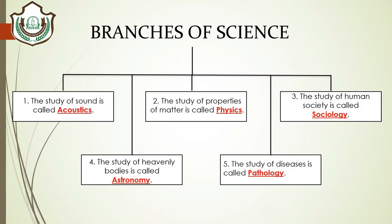Our next chapter is chapter number 13: branches of science. We all know that science is a study of nature and the behavior of natural things. The knowledge that we obtain through science helps us to understand our environment and world. There are various fields or branches of science.